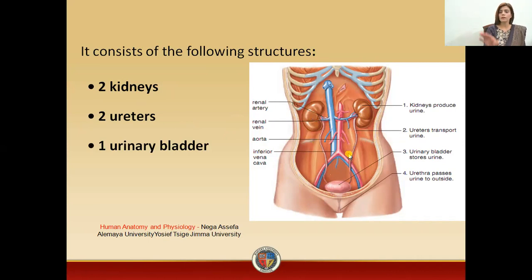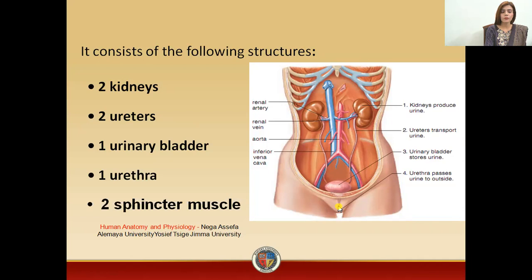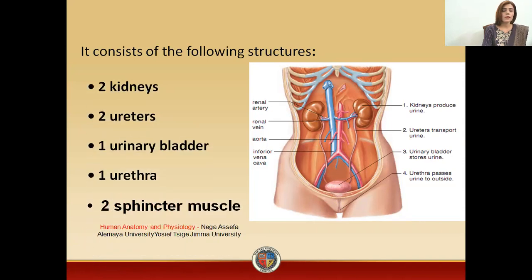Kidneys and ureters are the paired components of your urinary system. In the unpaired components, you have the urinary bladder, then you have the urethra. You also have two sphincter muscles. So the paired components are kidneys, ureters, and two sphincter muscles; the unpaired components are the urinary bladder and urethra.